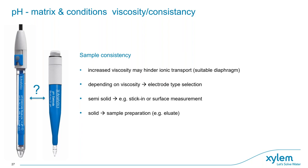If the viscosity is higher, this can hinder ionic transport. Depending on viscosity, you may need to choose another electrode type — for semi-solid samples, a stick-in or surface measurement electrode may be needed; for solid samples, sample preparation such as an elution is required and measurement is done in the aqueous phase. In many cases, even for soft cream or soft cheese, a refillable glass electrode is recommended over a stick-in electrode because it can be refilled, cleaned, and maintained, and it costs less. A stick-in electrode is more robust for harder materials like hard cheese or meat.